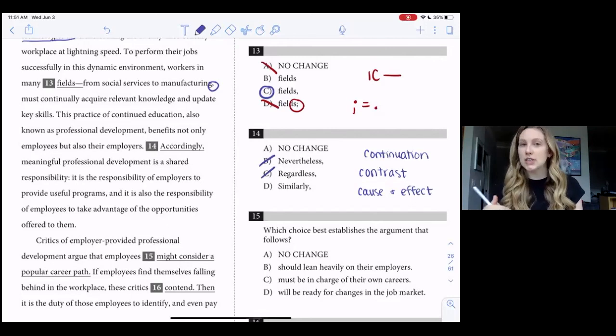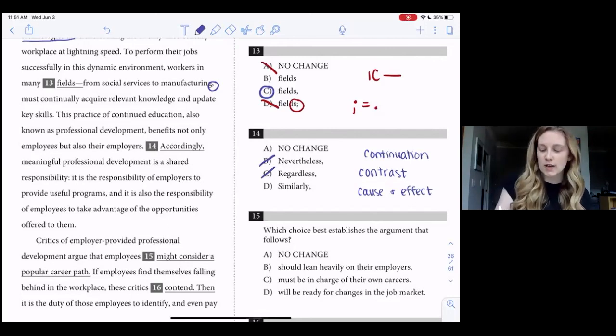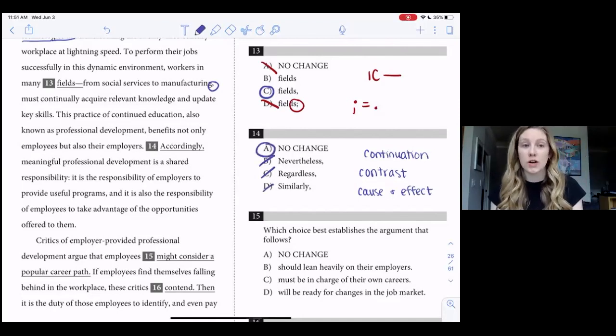Similarly, that's continuation, but it's not specifically cause and effect, and so I can also get rid of that one. So that leaves me with A, accordingly.